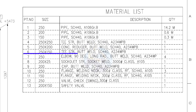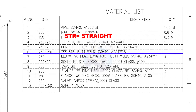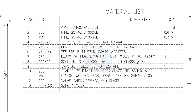Item number 6: 250 into 150 straight T, butt welded, schedule 40. Quantity 1. Item number 7: 250 NB, 90 degree long radius elbow, butt welded type, schedule 40. Quantity 1.